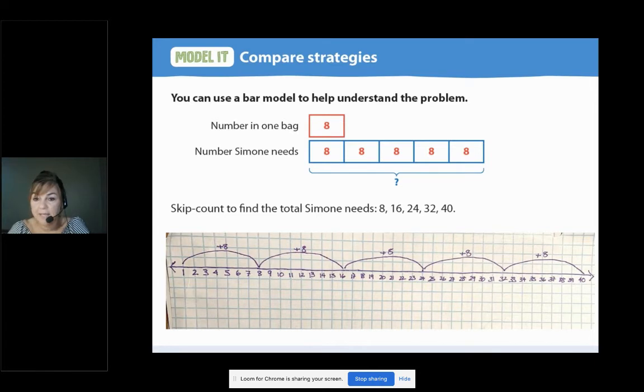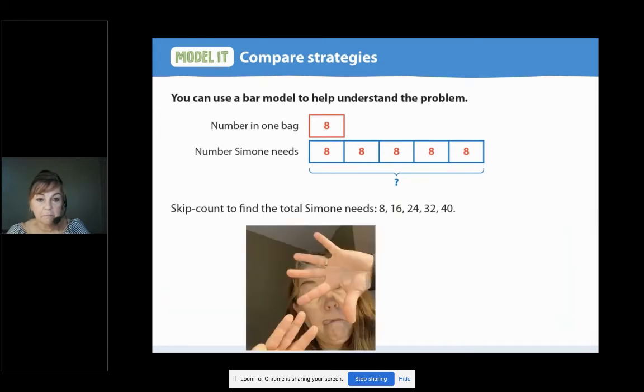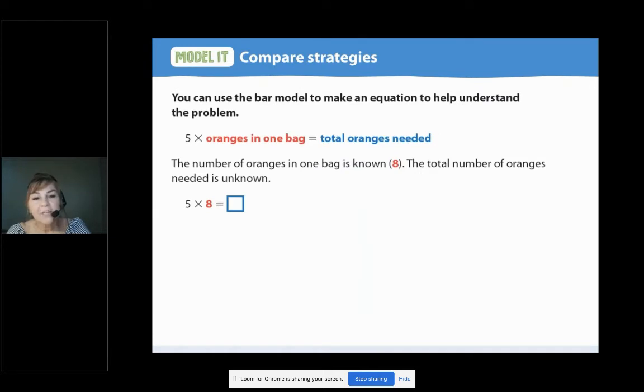So skip counting is the same thing as knowing your multiplication facts. Of course, you could have counted on your fingers. Ah, that's scary.